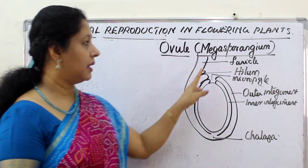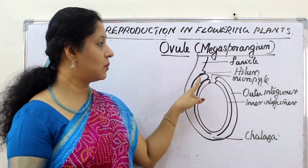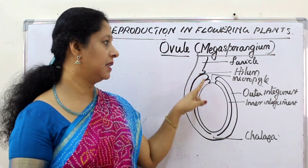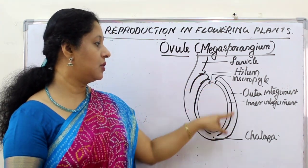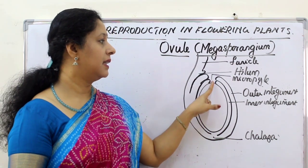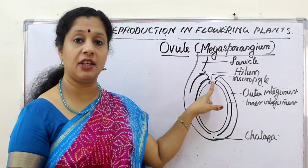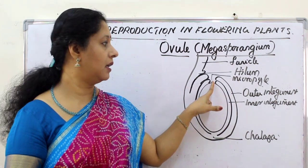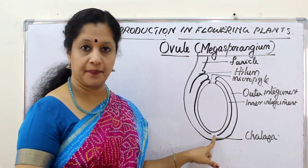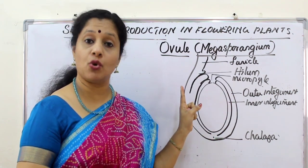The opposite part of the micropyle is called the chalazal end. The funicle attaches to the ovule at the hilum. The two integuments are the outer and inner integuments. The micropyle is the open part where the integuments are not touching. The opposite of the micropyle is the chalaza. These are the parts of a typical anatropous ovule.